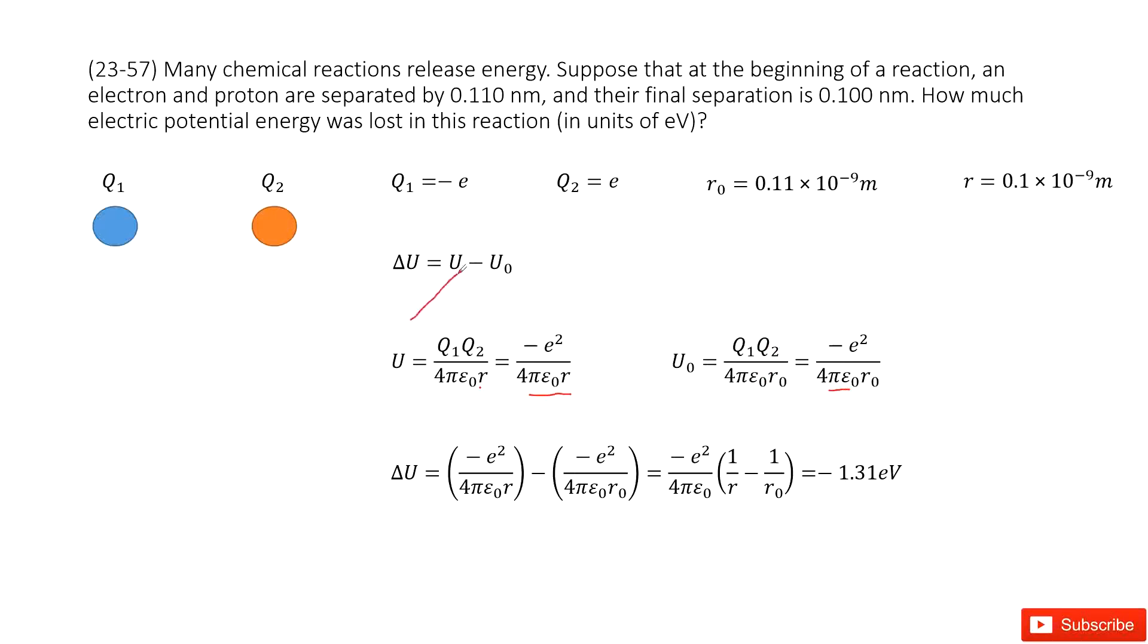Now you can see you can input U and U naught in this function. You get the function simplified. You get the final function look like this one. Input all the given quantity. You get the answer there. Thank you.